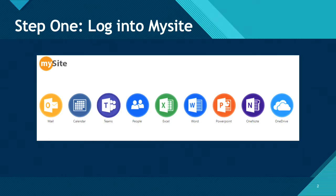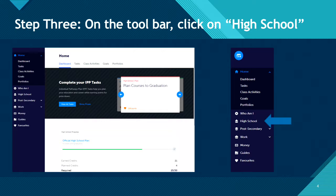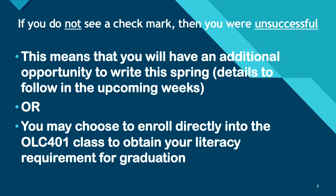The first thing you would have to do to check your literacy test results is to log on to My Site, just like you would with LMS. Then you would select My Blueprint — you may recall using My Blueprint in careers class. It is the icon with the blue circle with the M in it. Then on the toolbar, you would select High School. Then you would scroll down to the very bottom. There's a section at the bottom, as you can see by the arrow, entitled Literacy Requirement. There's either a check mark indicating you have completed the literacy requirement, or if you do not see a check mark, then you were unsuccessful.